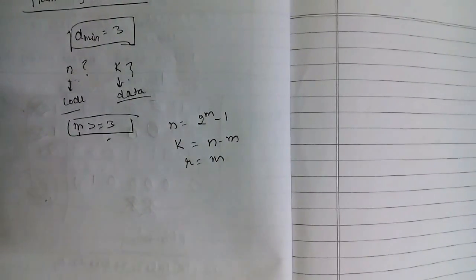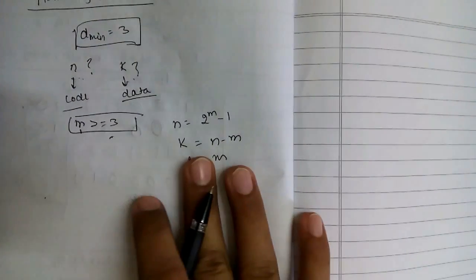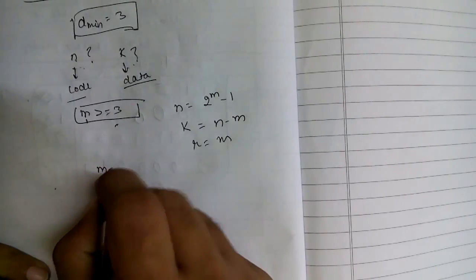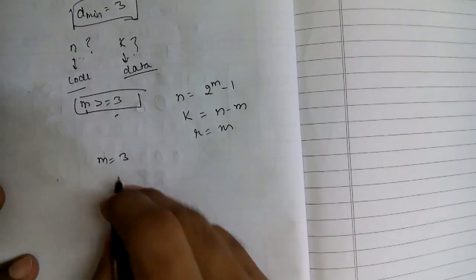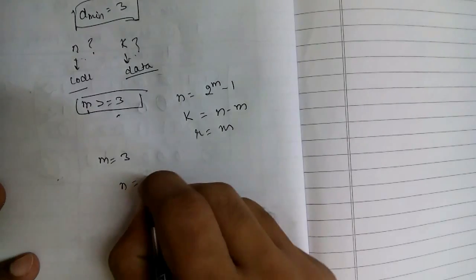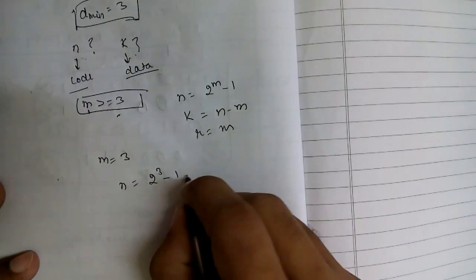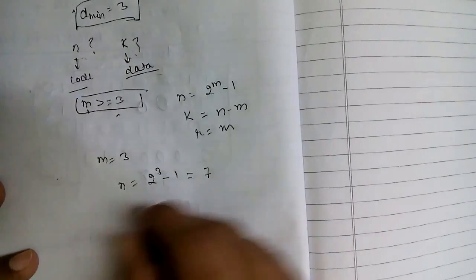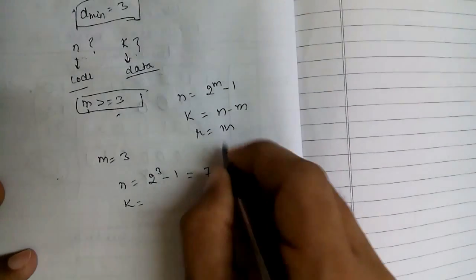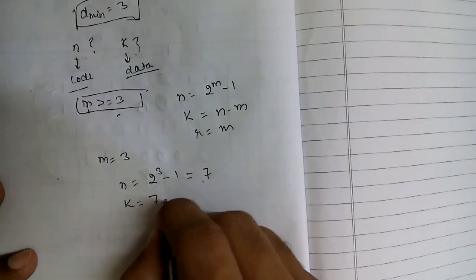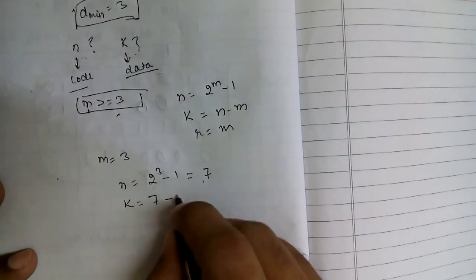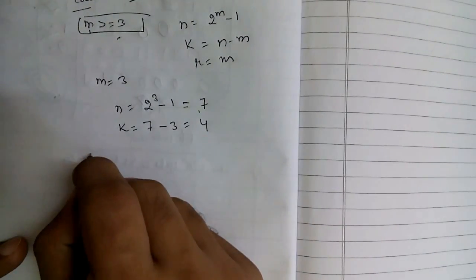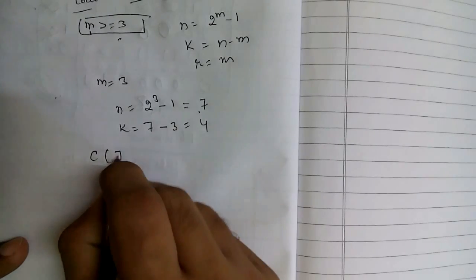Let's take an example. I am choosing m equal to 3. So n equals 2 raised to 3 minus 1, that is 7. And k equals 7 minus 3, which equals 4. So we are going to take an example of Hamming code C(7,4).